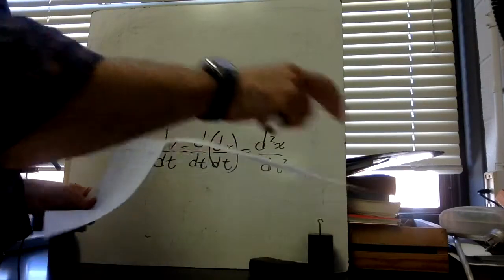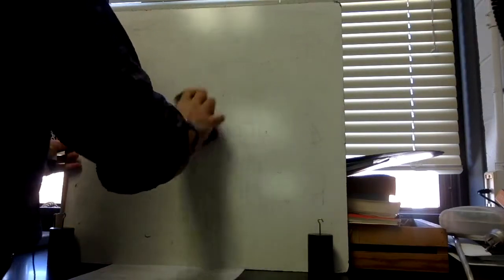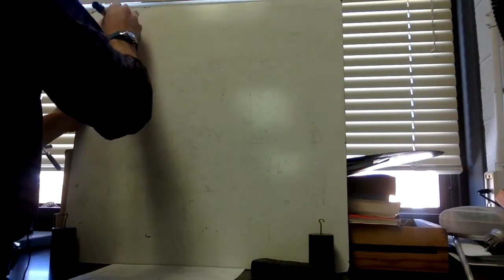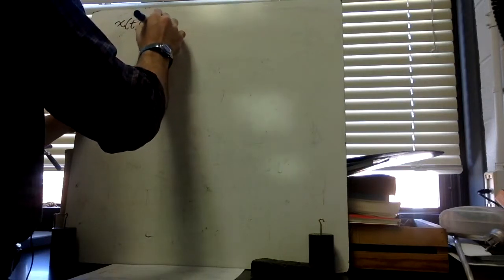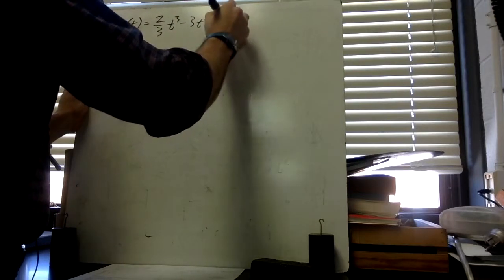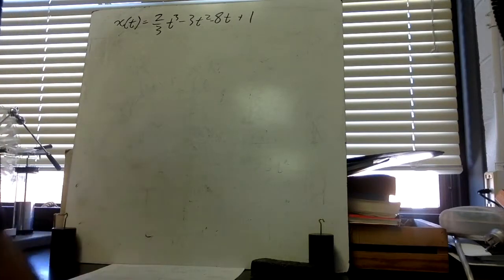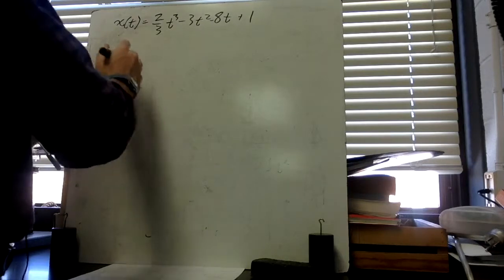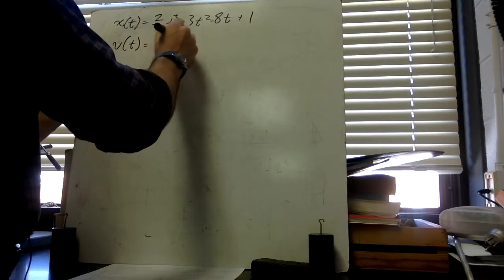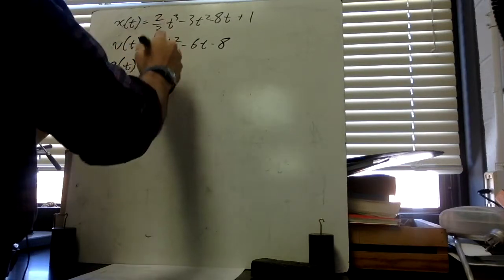Okay, let's get into some examples so you can see what we're dealing with. This is where the rubber meets the road. We're given this function: x(t) = 2/3 t³ - 3t² - 8t + 1. We're going to try to find these things without a calculator. Part A: what is the general expression for v(t)? This should look familiar from the other lessons. This is going to be 2t² - 6t - 8. a(t) then is going to be 4t - 6.